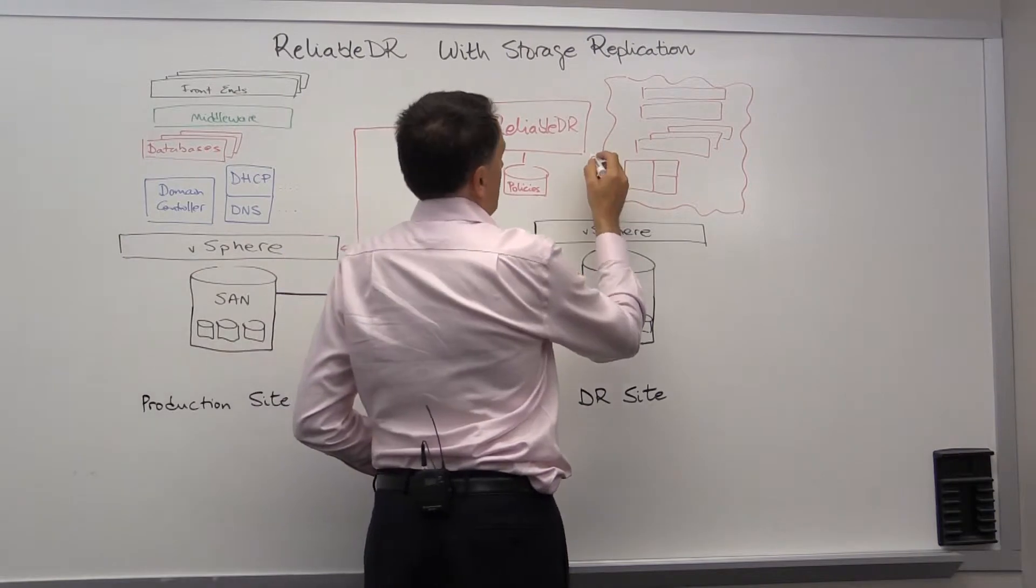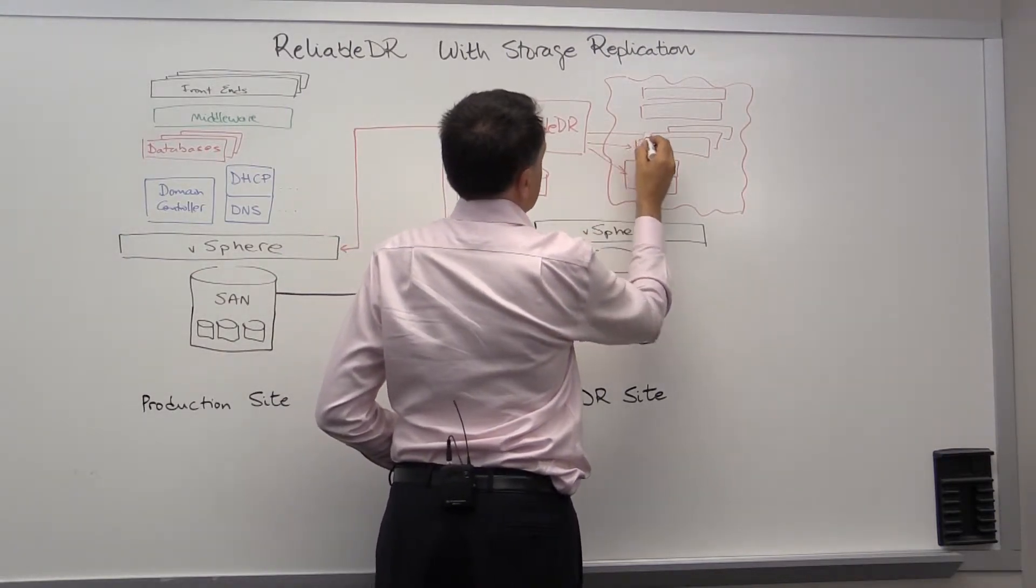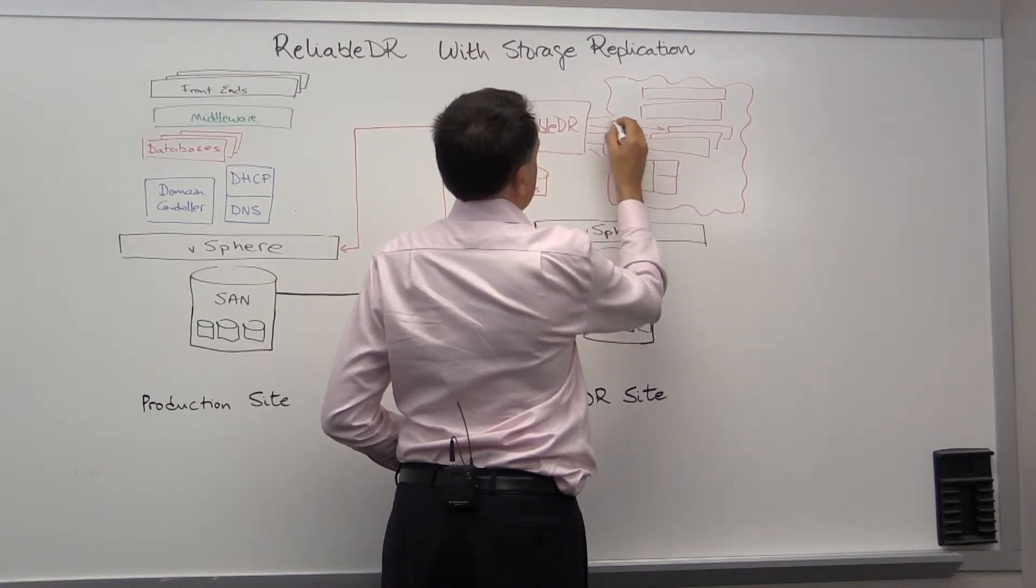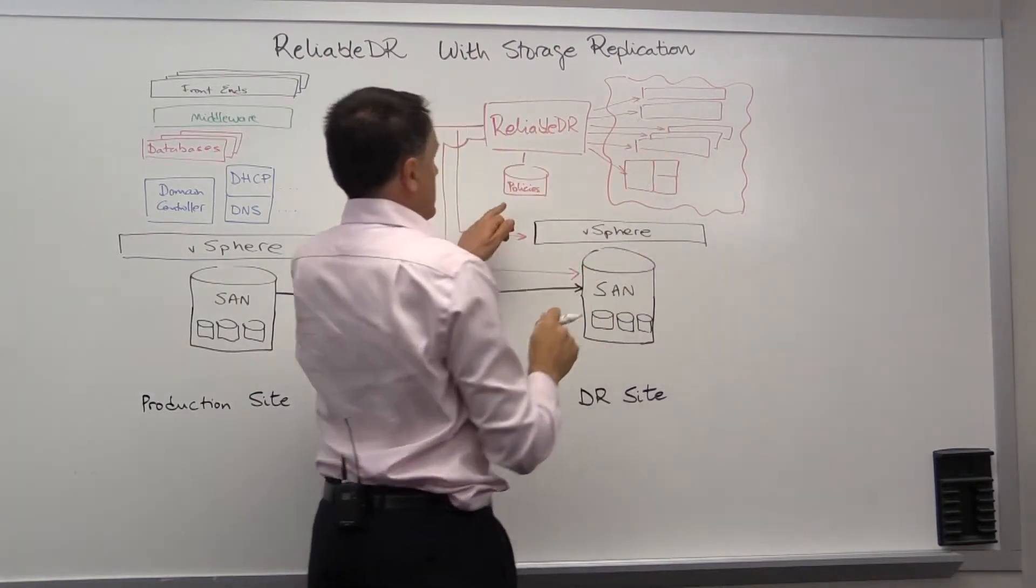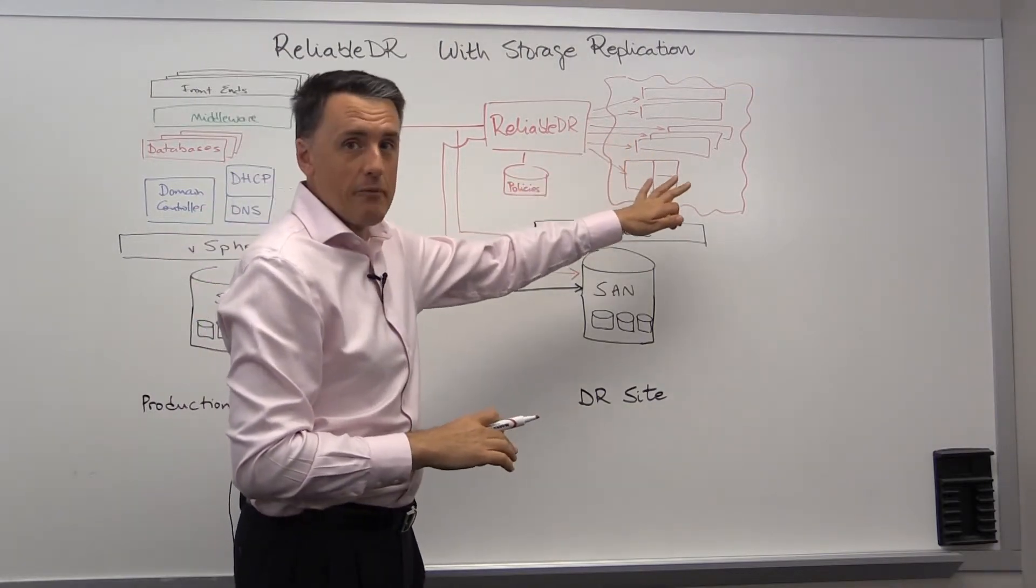When the VMs are powered on, Reliable DR will actually connect directly to them individually, and will verify that the recovery policies that have been set by the disaster recovery administrator are being met.